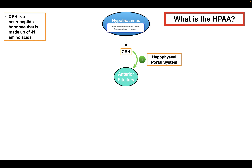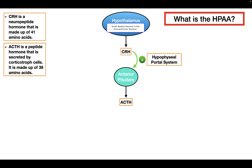So the main effect of CRH is to stimulate the anterior pituitary to release ACTH. After ACTH is released, it moves throughout the body to a specific region called the adrenal cortex in the adrenal gland. So what is the effect of ACTH on the adrenal gland?